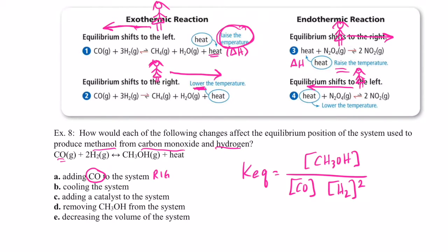Adding CO shifts it to the right, producing more methanol. What if we cool the system? This is an exothermic reaction, so if we make it cold we shift toward where there is heat — the right-hand side — so cooling also shifts it right. What about adding a catalyst? A catalyst speeds up the reaction by lowering activation energy, but it does not shift the equilibrium — so there is no shift when a catalyst is added.